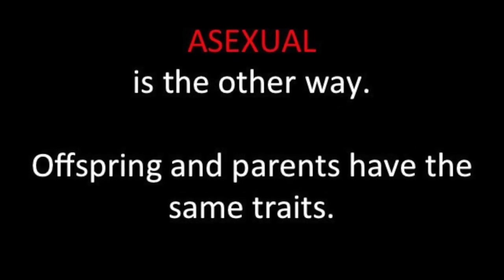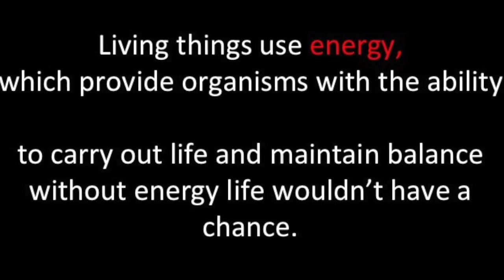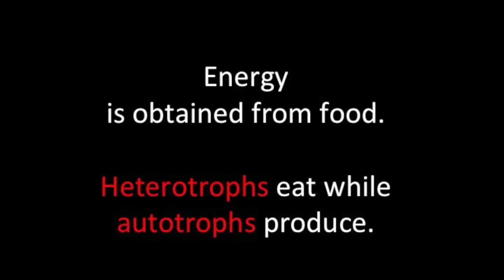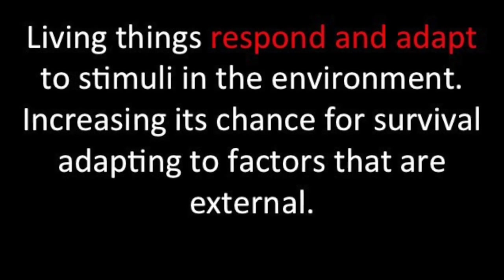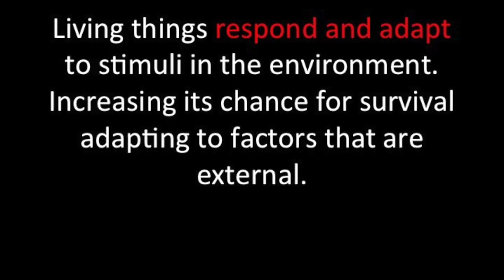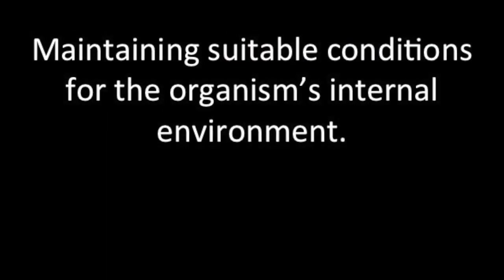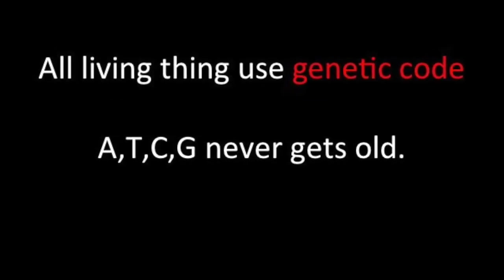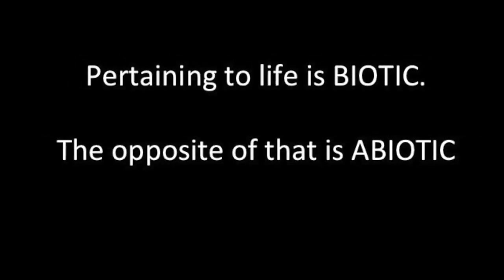Reproduction can happen in two ways: sexual is when two parents make; asexual is the other way — offspring and parents have the same traits. Living things use energy, which provides organisms with the ability to carry out life and maintain balance. Without energy, life wouldn't have a chance. Energy is obtained from food — heterotrophs eat while autotrophs produce. Living things respond and adapt to stimuli in the environment, increasing their chance for survival, adapting to factors that are external. Living things maintain homeostasis, which means keeping everything in balance, maintaining suitable conditions for the organism's internal environment. All living things use genetic code — A, T, C, G — never gets old. Pertaining to life is biotic; the opposite of that is abiotic.